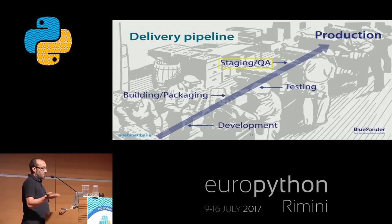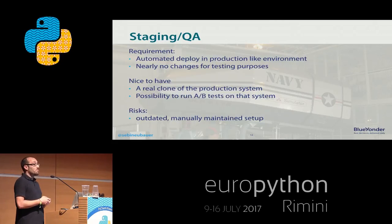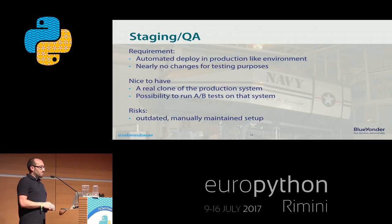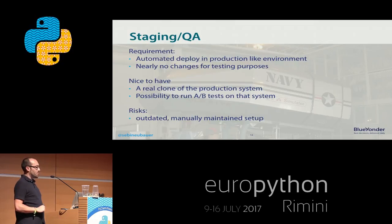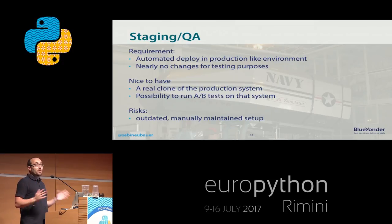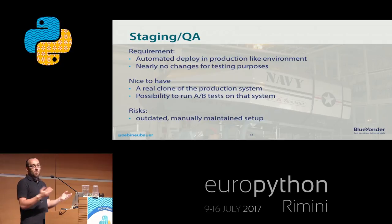The last step before production is staging or quality assurance. The requirement here: we have an automated deploy — we really test how we install it on our target systems and it should be a production-like system. We don't want any changes for this staging. With the PyTest example, in this stage we do not want PyTest installed on the QA system — it should be a really production-like deploy. Nice-to-have: if we can afford it, a real one-to-one clone of the production system, or at least smaller servers and databases but production-like.